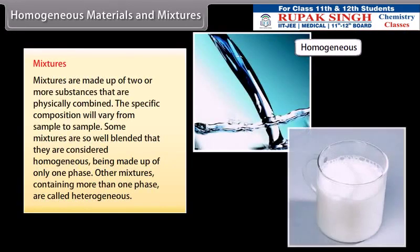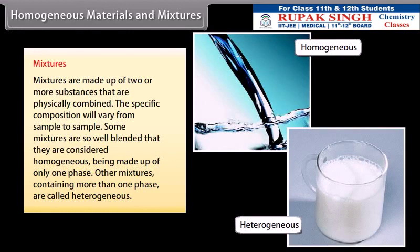Mixtures are made up of two or more substances that are physically combined. The specific composition will vary from sample to sample. Some mixtures are so well blended that they are considered homogeneous, being made up of only one phase. Other mixtures containing more than one phase are called heterogeneous.